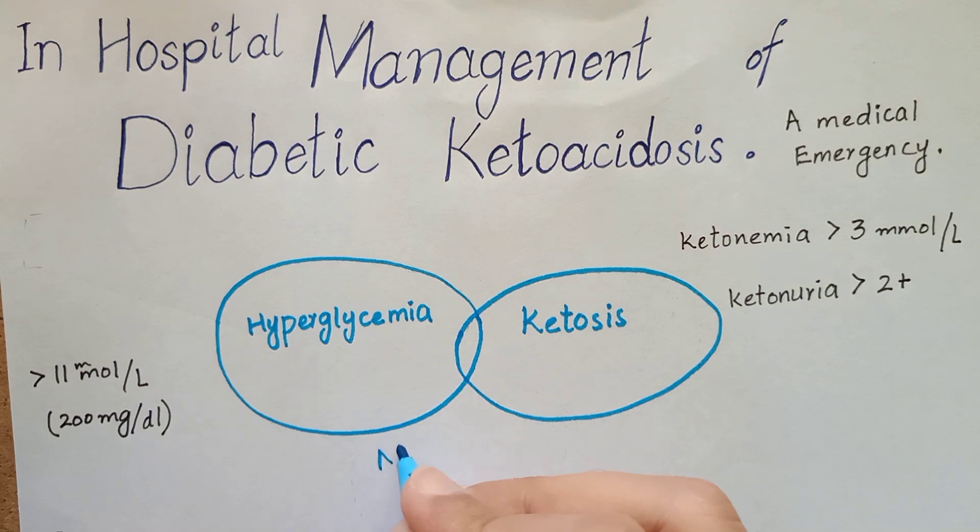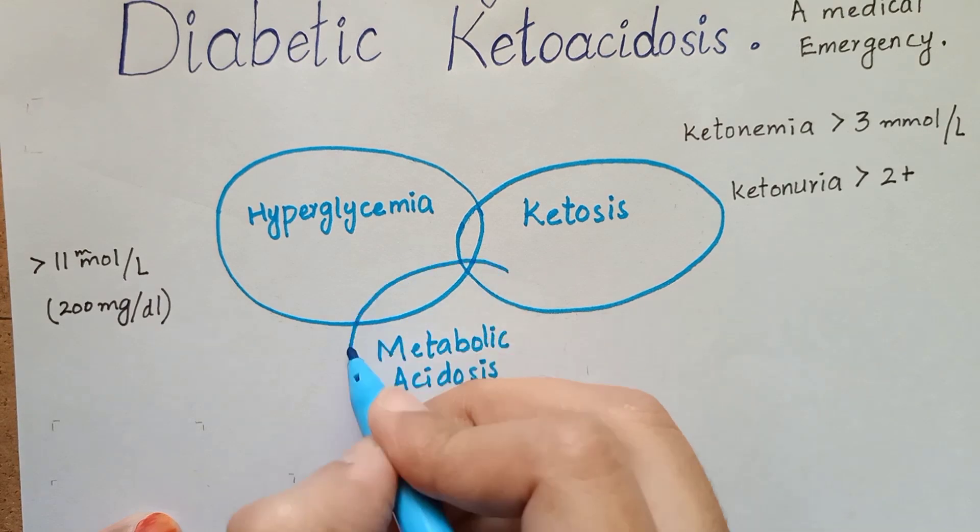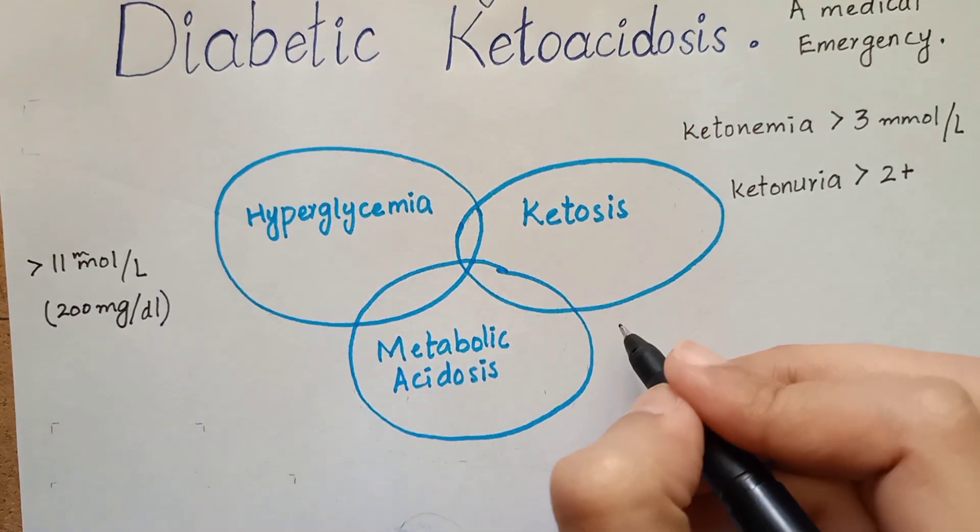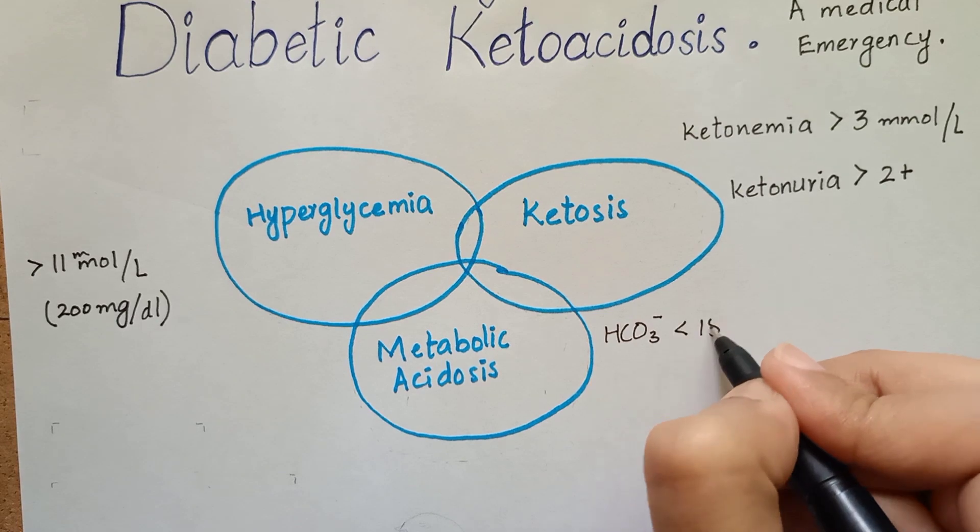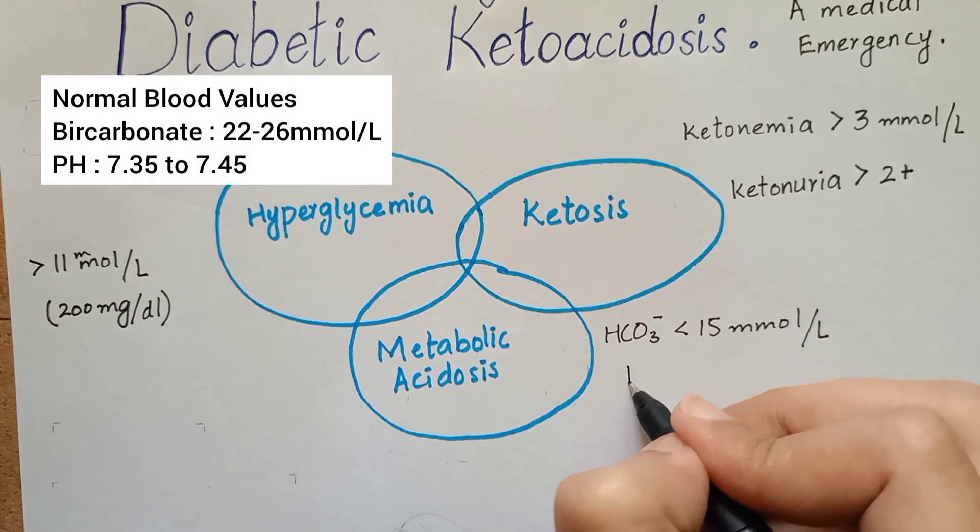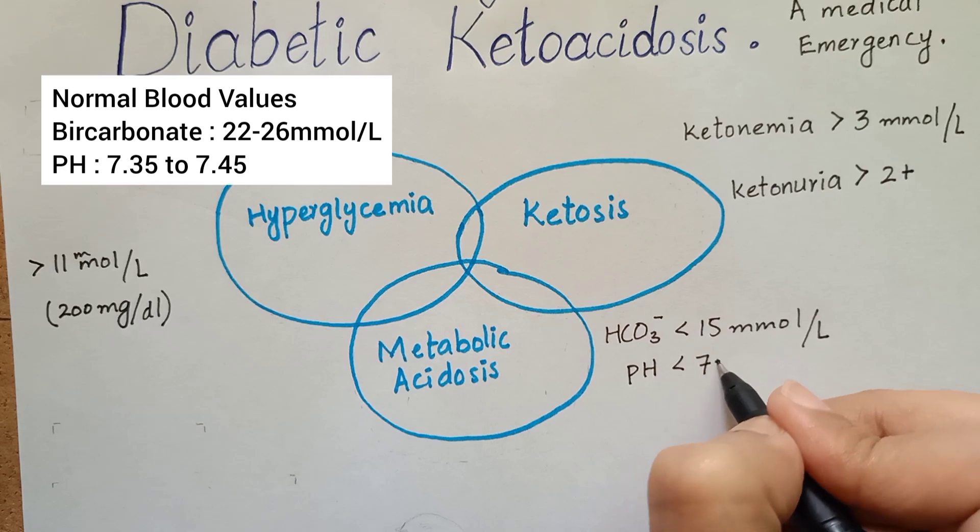The third feature is metabolic acidosis. That can be assessed by venous bicarbonate level less than 15 millimole per liter or blood pH of less than 7.3.